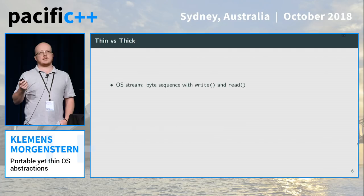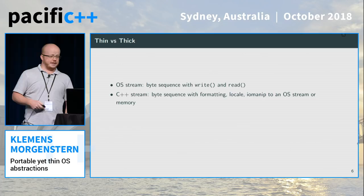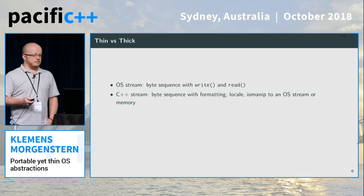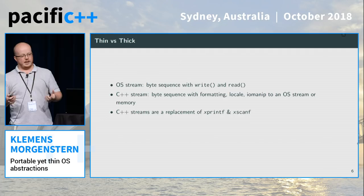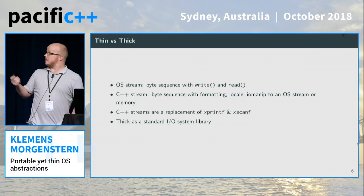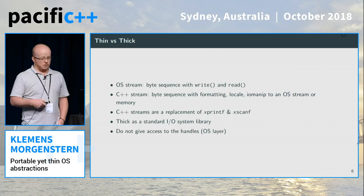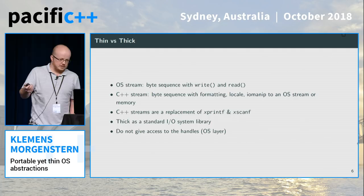On thin versus thick: if you look at streams in an operating system, it's a byte sequence — you have read, write, and seek. But in C++, a stream has a byte sequence with formatting, locale, IO manipulators, writing to an OS stream or into memory. That's a thick concept because it's a replacement for printf and scanf; it's not a library that talks directly to the OS. We have a thick layer doing a lot of things even if we don't want them. And you can't get the underlying handles — if I open a file stream, I can't access the file handle or get the stdout handle from std::cout.